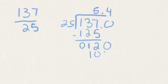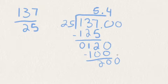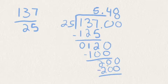25 into 120 goes in four times. 4 times 25 is 100. When we subtract, we get 20, and bring down another 0 for 200. Finally, 25 goes into 200 an even number of times, 8. 25 times 8 is 200. So that's the end. 137 25ths is the same as 5.48.